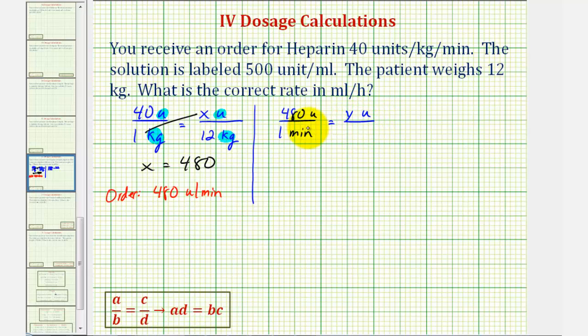But we need to have the same units on the bottom. Since one hour equals 60 minutes, we'll write this as 60 minutes. And now we can cross-multiply. Once again, notice how we have the same units on the top and the same units on the bottom. So now we can cross-multiply and solve for y.